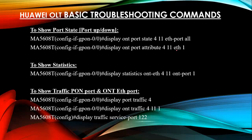To show traffic on the PON port, go to interface mode and use 'display port traffic' for your PON port. For an ONT ethernet port (UNI port), to check traffic utilization for a specific ONT, use 'display ont traffic 4' — where 4 is the PON port and 11 is the ONT ID, and 1 is the ONT ethernet port.